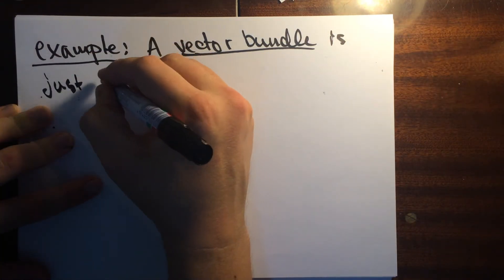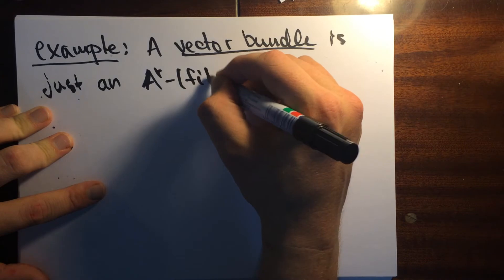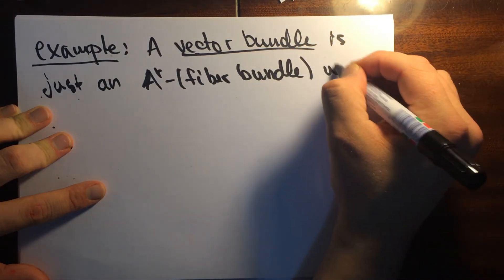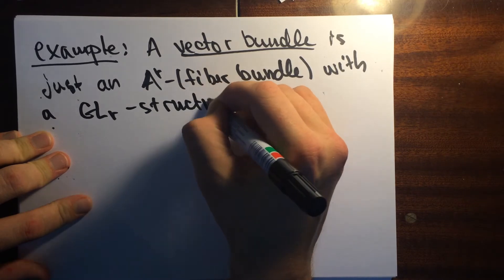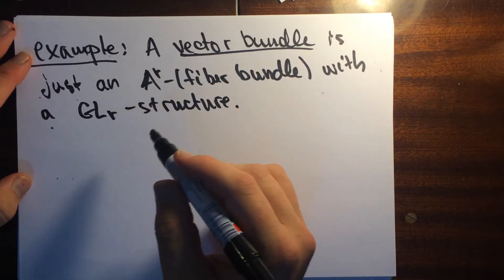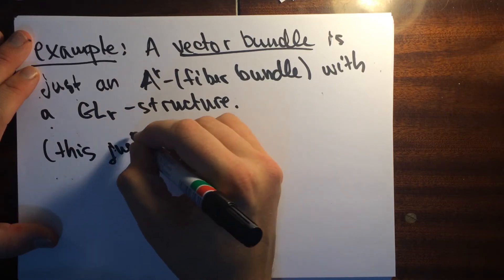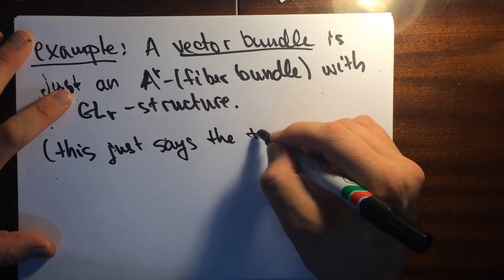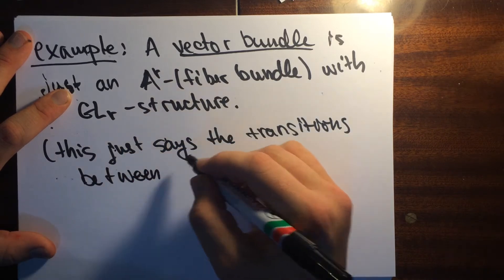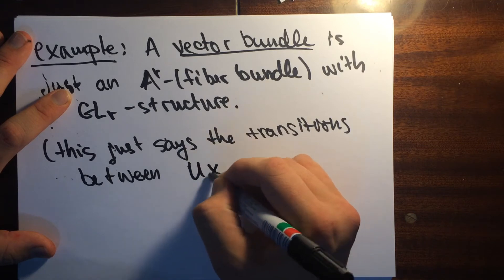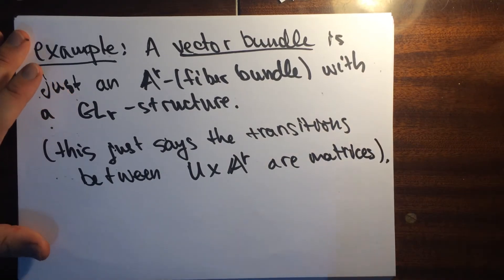A vector bundle of rank r is just an A^r fiber bundle with a GL_r structure. This is saying that the transitions between the trivializations — these U × A^r's — are given by invertible matrices.